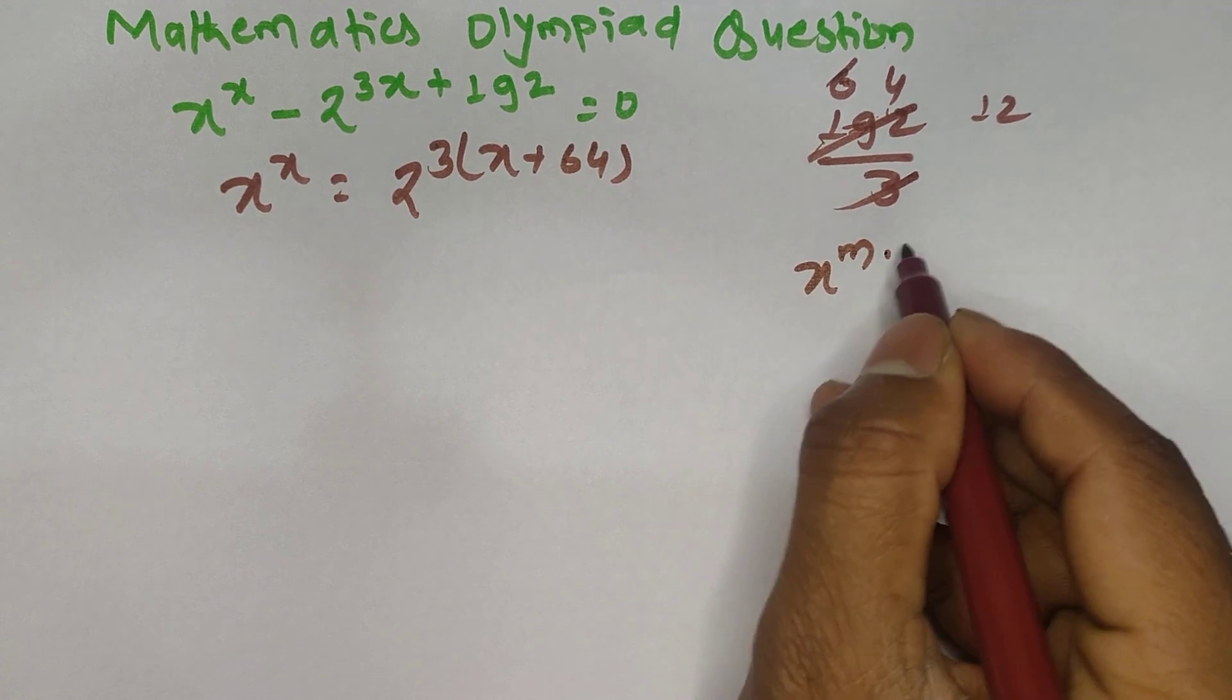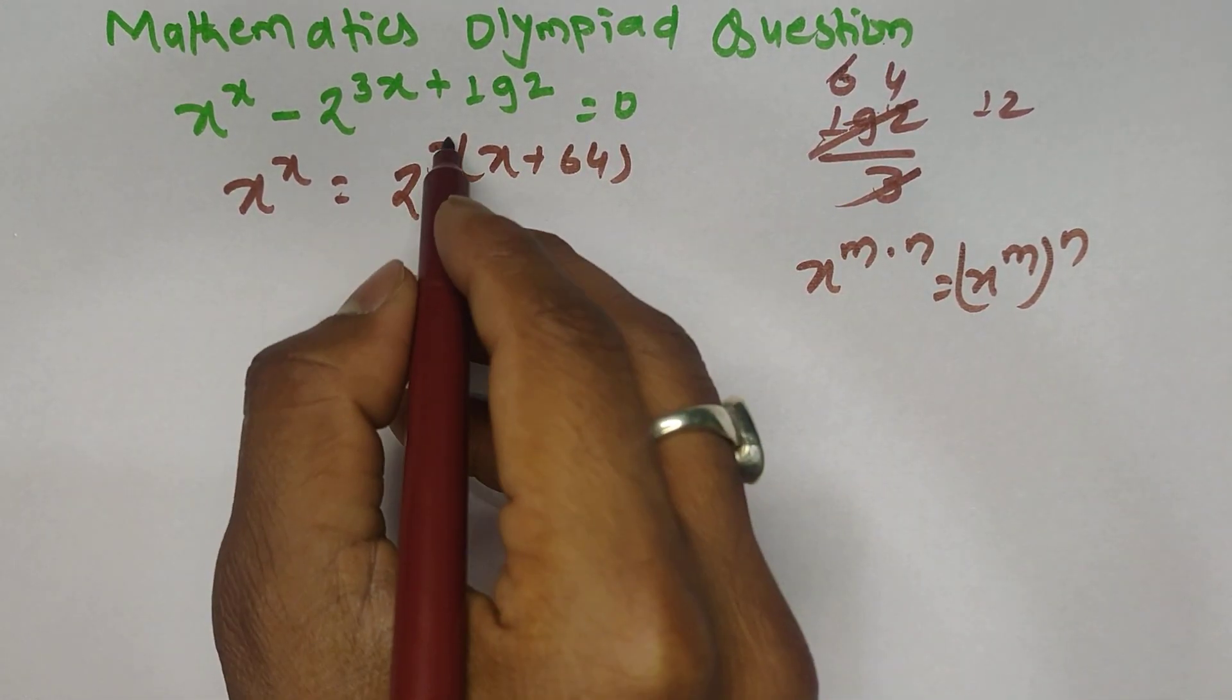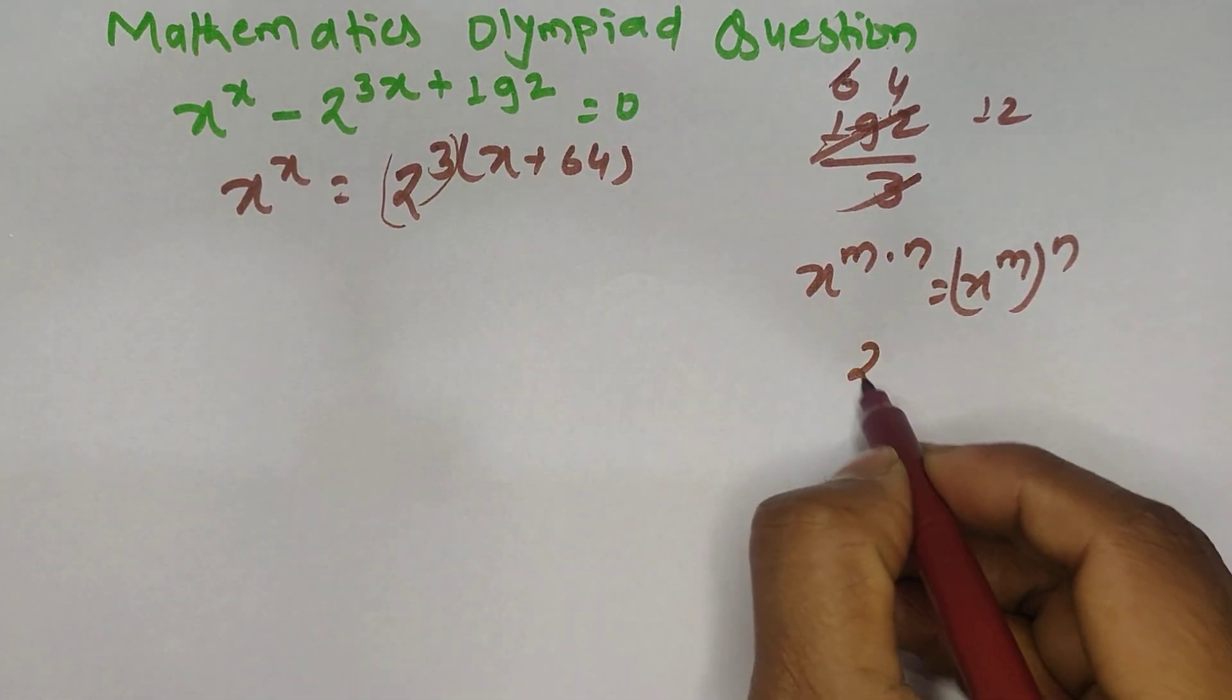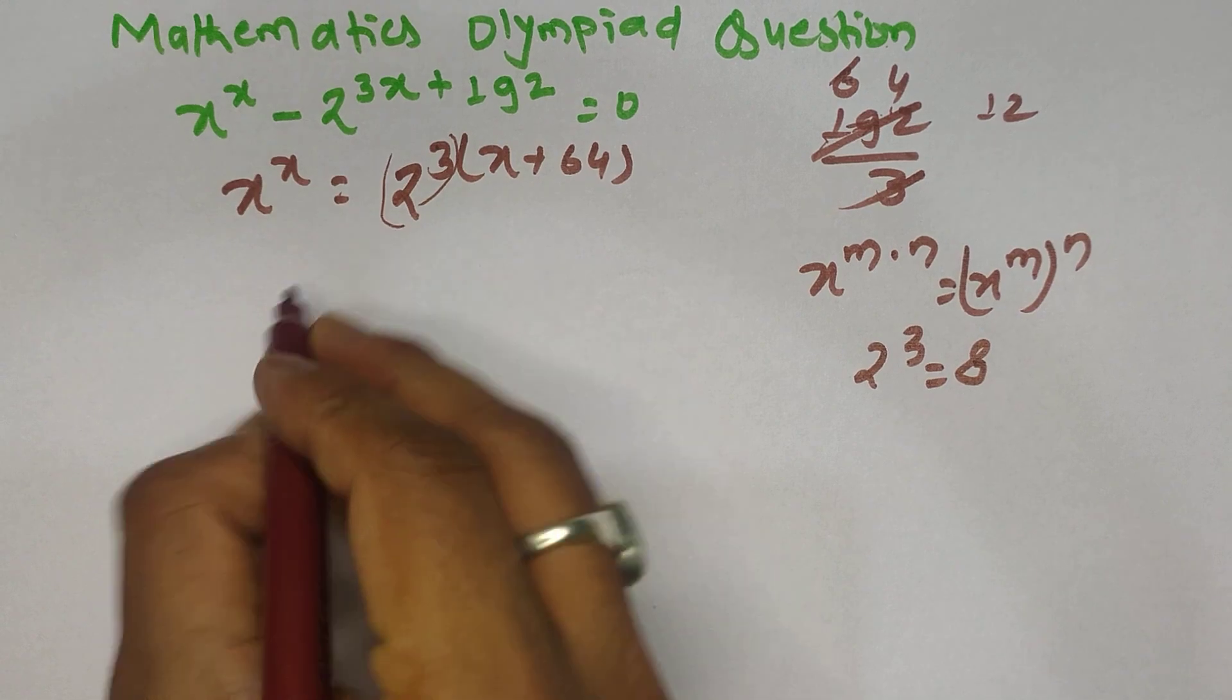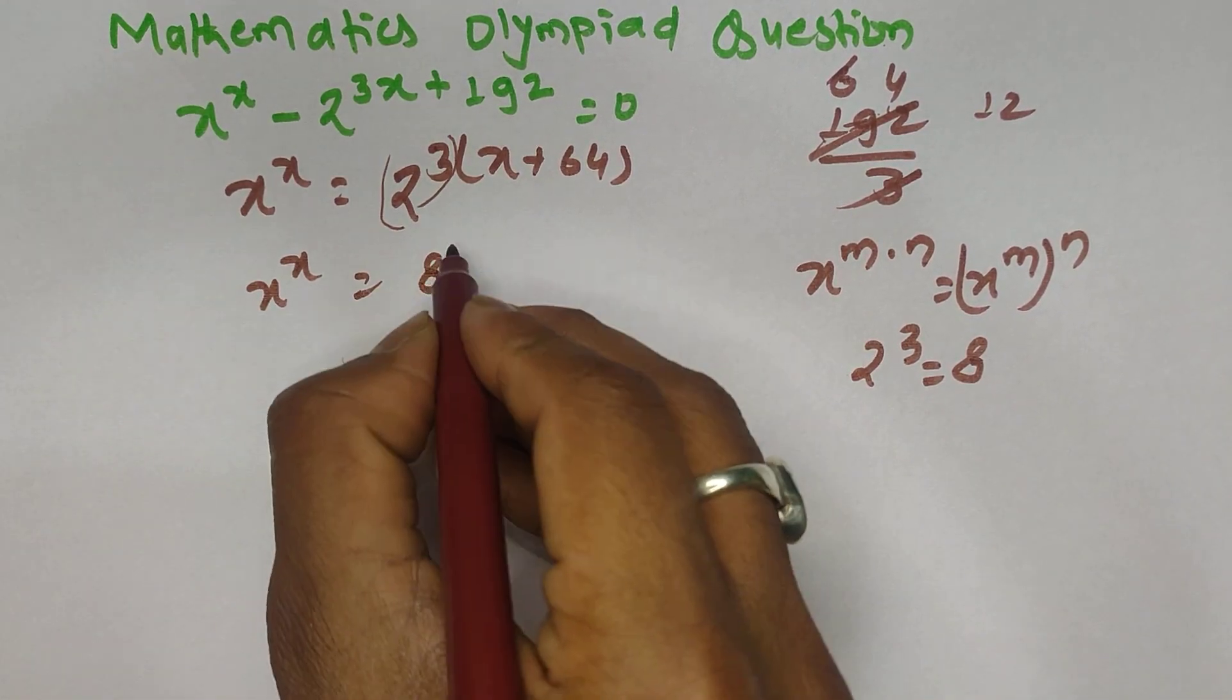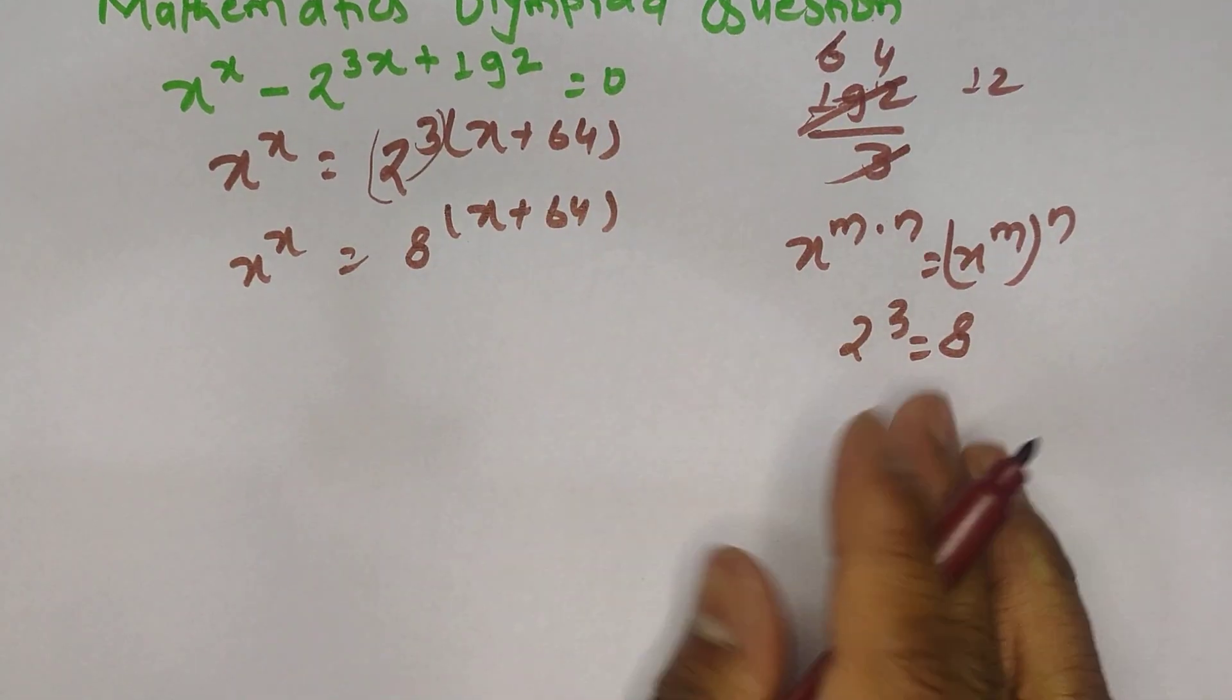By this rule, x power m times n can be written as x power m to the power n. So from here we can write this as one bracket and 2 power 3, so I'm going to write here directly x power x as 8 power x plus 64.